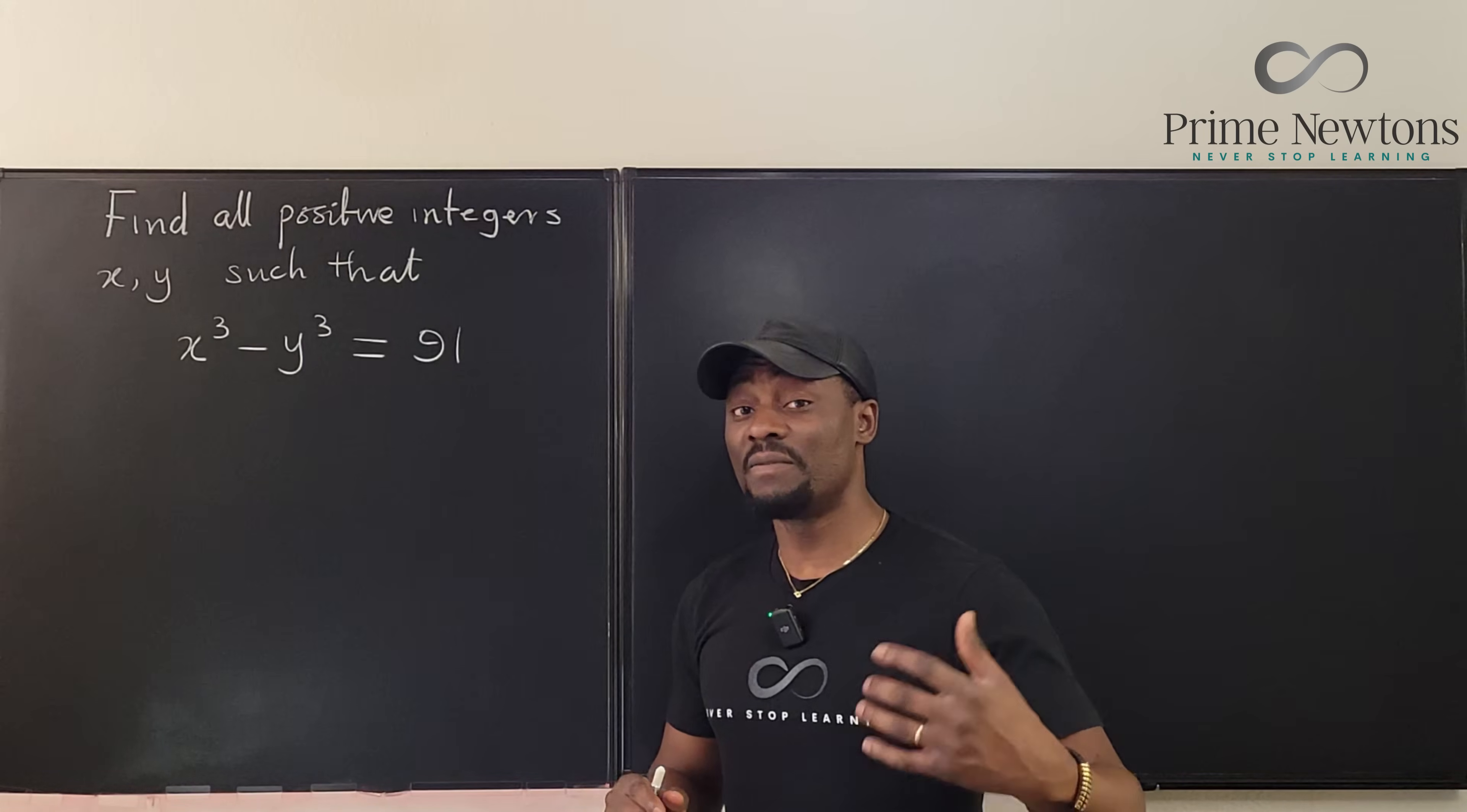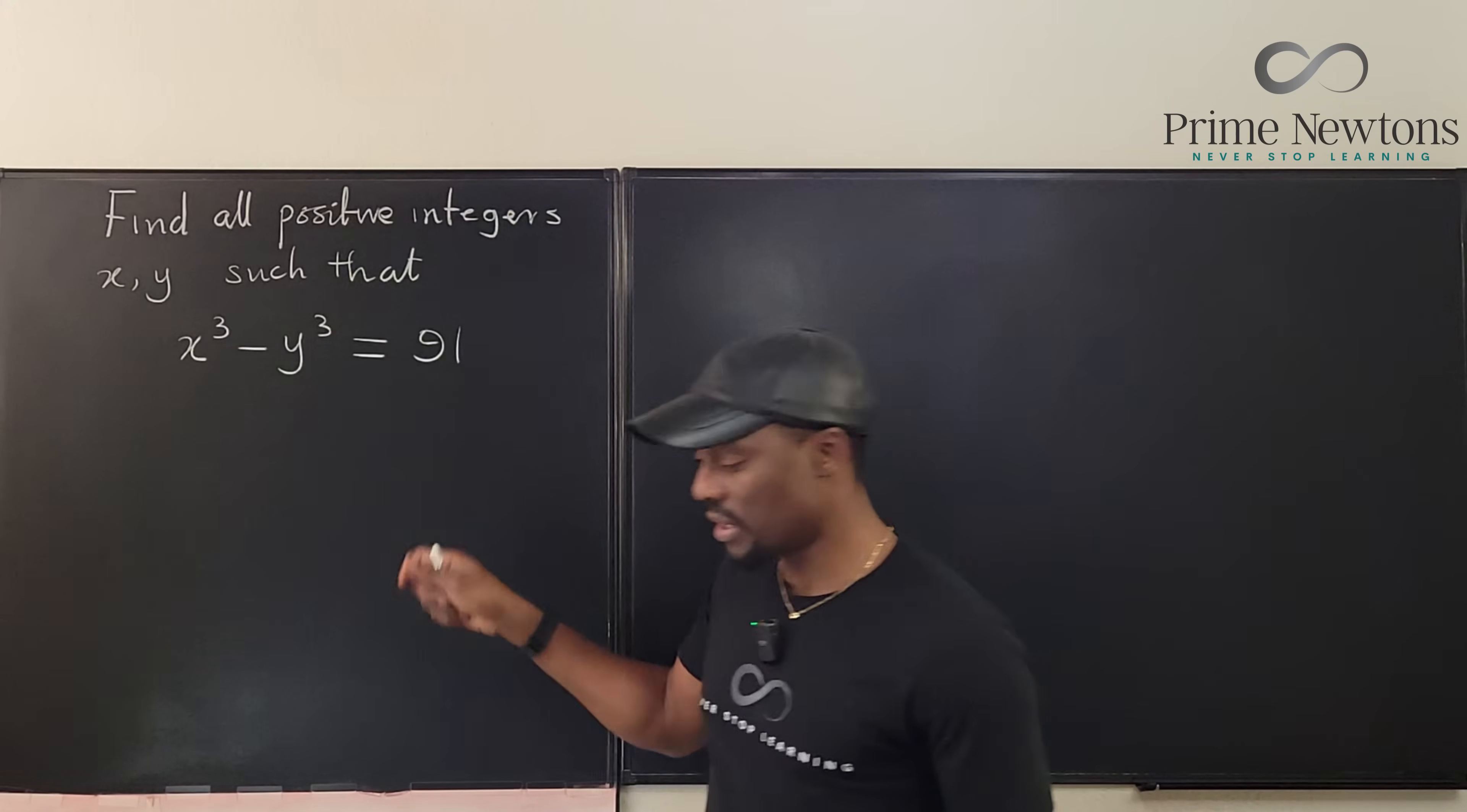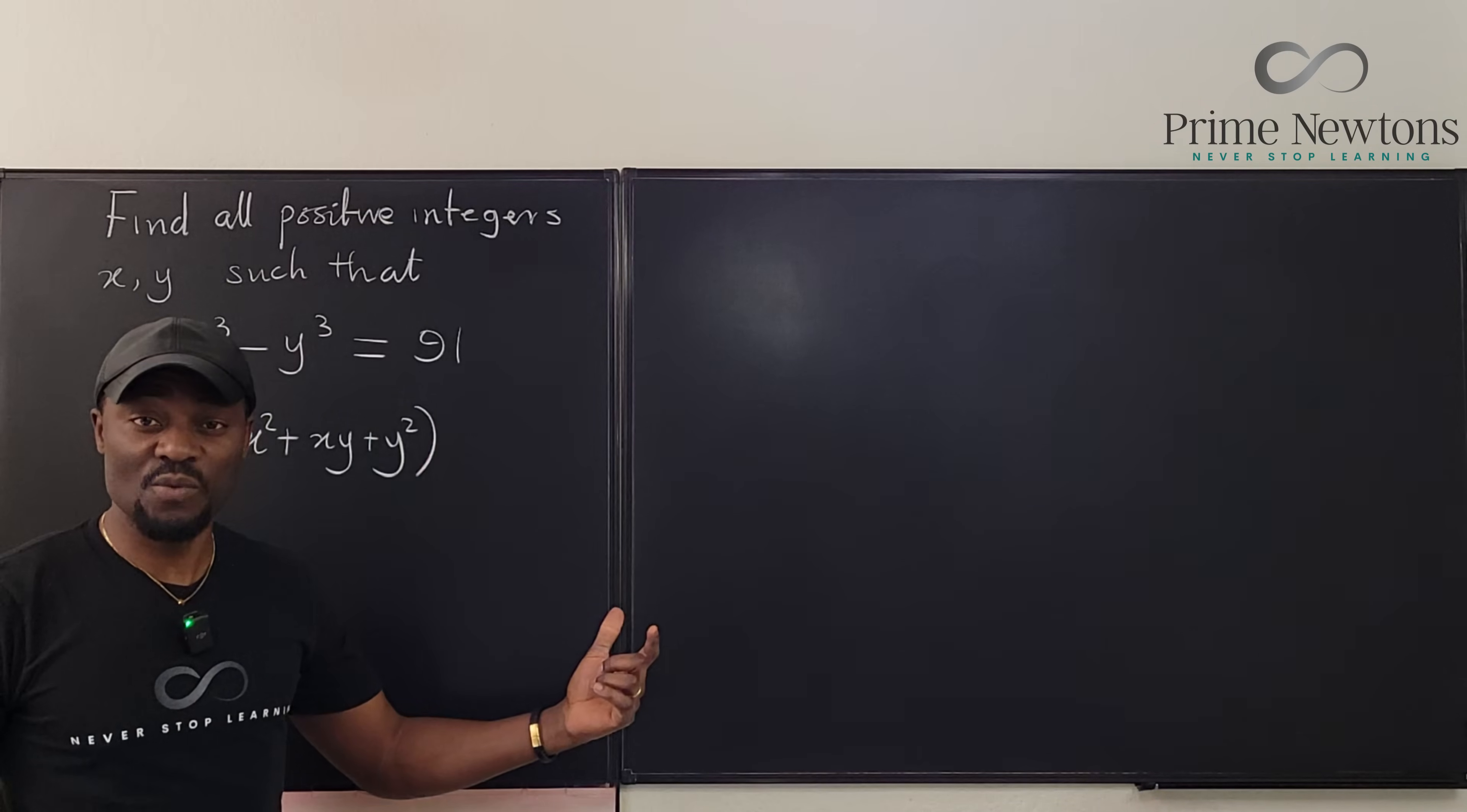The first move in a problem like this is to factor and establish a product. So you write the left-hand side as a product, you write the right-hand side as a product. If I factor difference of two cubes, I know it's going to be x minus y times x squared plus xy plus y squared. And then on the right-hand side, it's going to be 91.